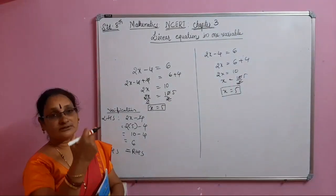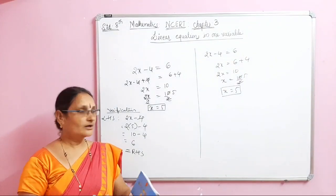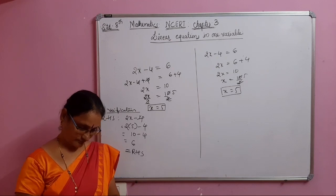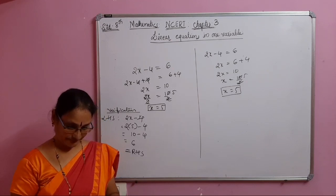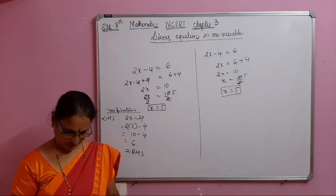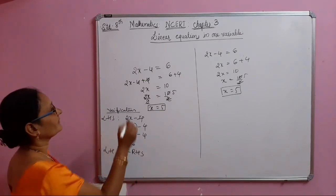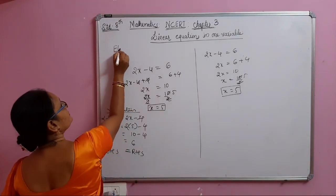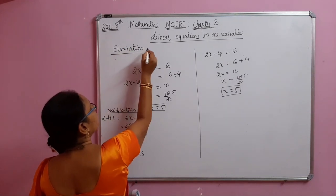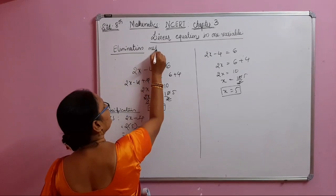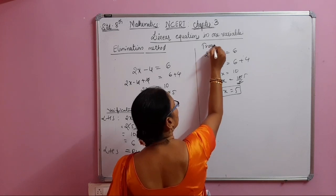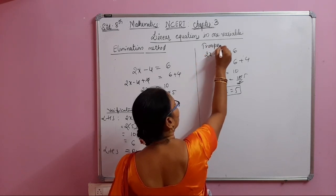We will follow the transposing method — it is a very important method. Note that the elimination method is not in the textbook; I explained it because it was in 7th standard. The transposing method is the one you need to carry forward.